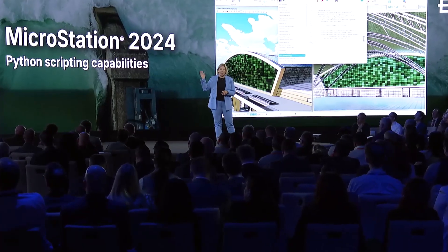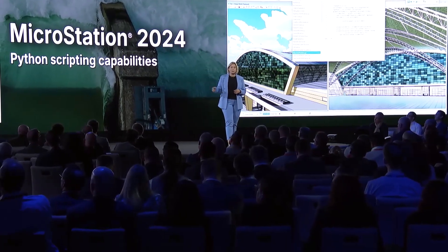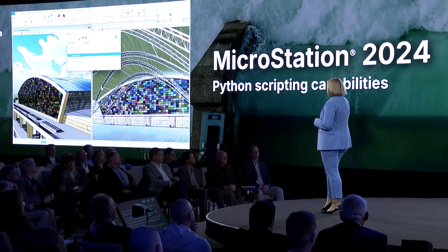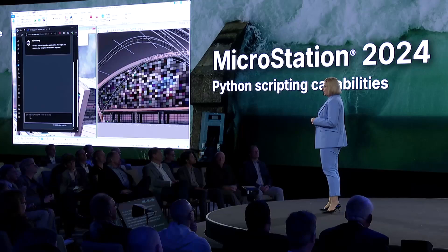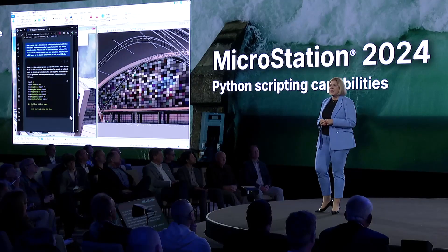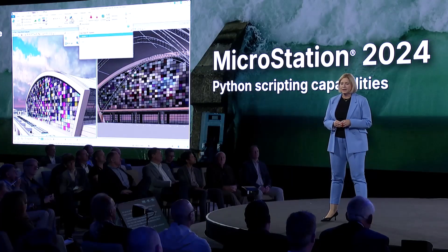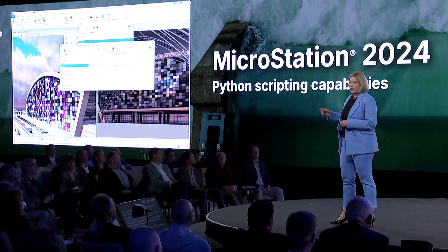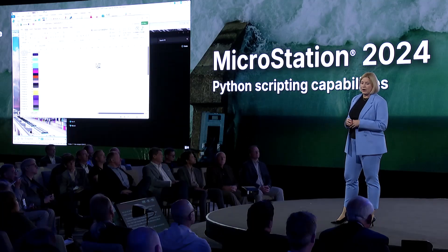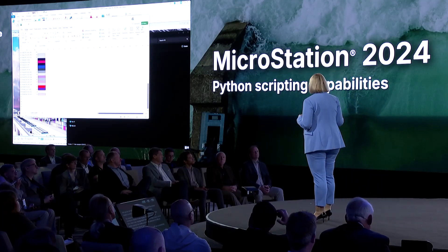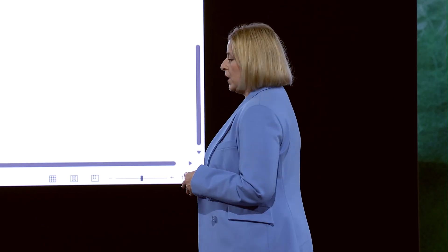Here you can see Python and an open source library generating multiple designs to make sure you have the best option for your facade. This unlocks endless possibilities for expanding MicroStation's capabilities, including the integration of large language models and generative AI. Using a large language model trained on our Python library, we have written a prompt that enables us to instantly understand the different properties of the colored glass, outputting the result to an Excel spreadsheet — saving considerable time analyzing this complex structure.